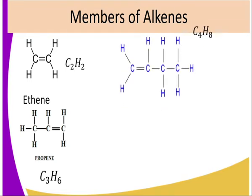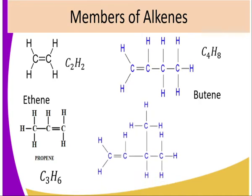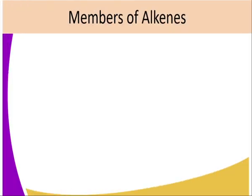Member number three is Butene, having four carbon atoms. Member number four is Pentene, having five carbon atoms. The molecular formula therefore is C5H10, meaning five carbons bonded together where each carbon is saturated, giving us ten hydrogen atoms.